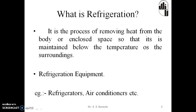Refrigeration can be defined as the process of removing heat from a body or enclosed space so that its temperature is first lowered and then maintained at a level below the temperature of the surroundings. In such a case, the body or enclosed space is said to be a refrigerated system. The equipment used to maintain the required temperature is called refrigerating equipment. The working substance used to produce refrigeration is called the refrigerant.